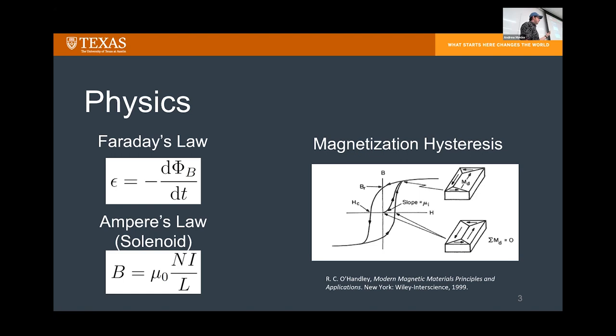As far as the physics for that first hard drive, it really comes down to three concepts: Faraday's law, Ampere's law, and magnetization. Faraday's law: if you have a closed loop and change the magnetic flux through that loop, a voltage is induced on the outer edge to cancel out that change. Ampere's law gives us the field created inside a solenoid with N loops, current I, and length of the solenoid.